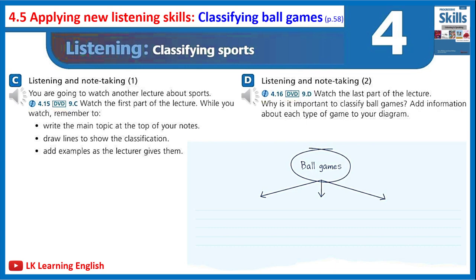Lesson 4.7 Real-time Speaking — Ball Games for PE. We've heard about three categories of ball games: hand sports, foot sports, and bat sports. Why is it important to classify ball games? Because at school, we must teach children to play at least one game in each category.